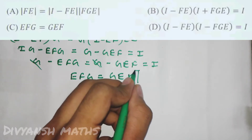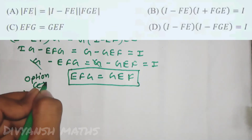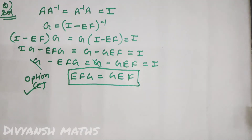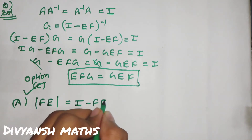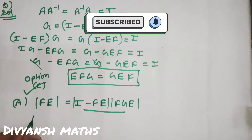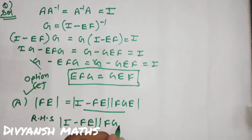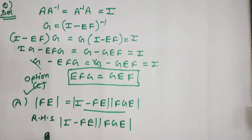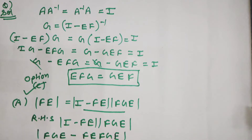Option A check करते हैं: det(G) = det(I minus FE) × det(FGE). RHS उठाते हैं — det(I minus FE) multiply में det(FGE). इसका multiplication करेंगे तो आएगा det(FGE minus FEFGE).